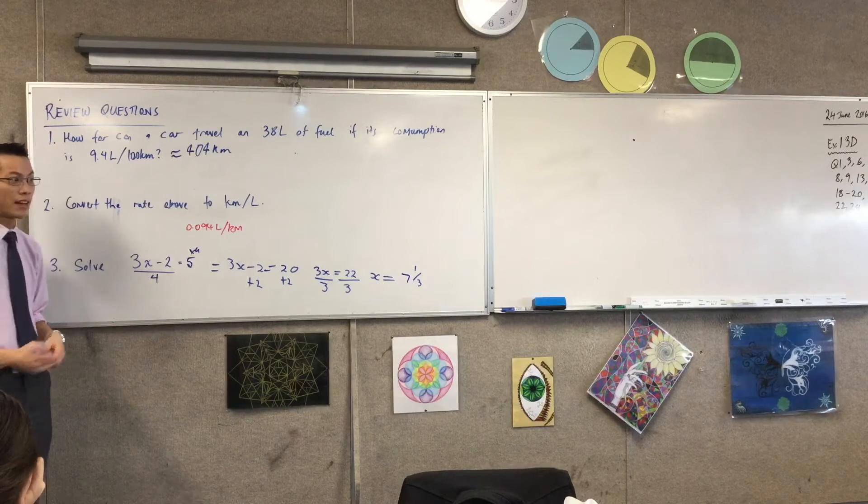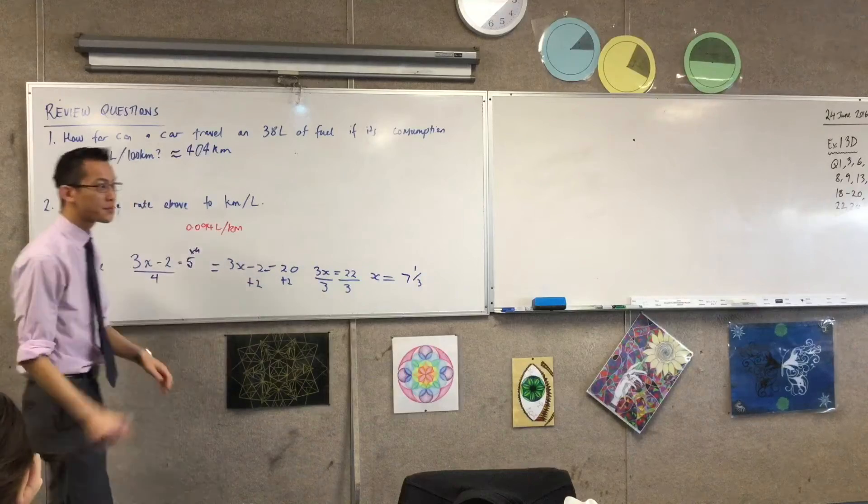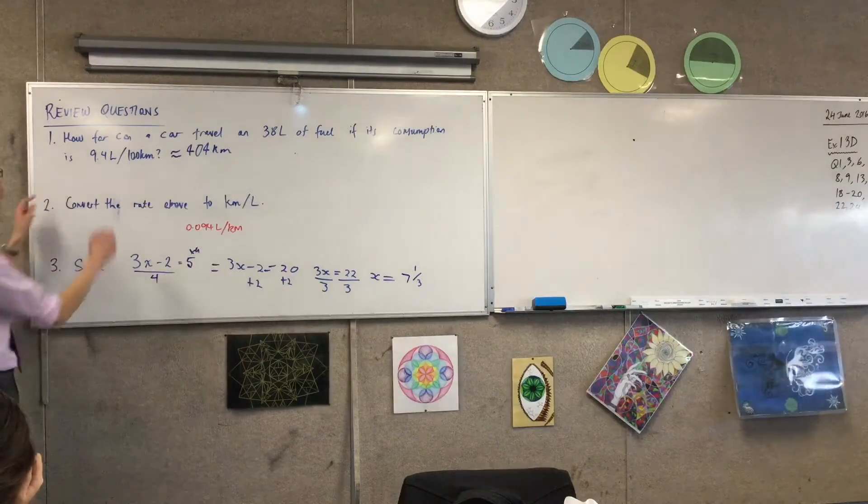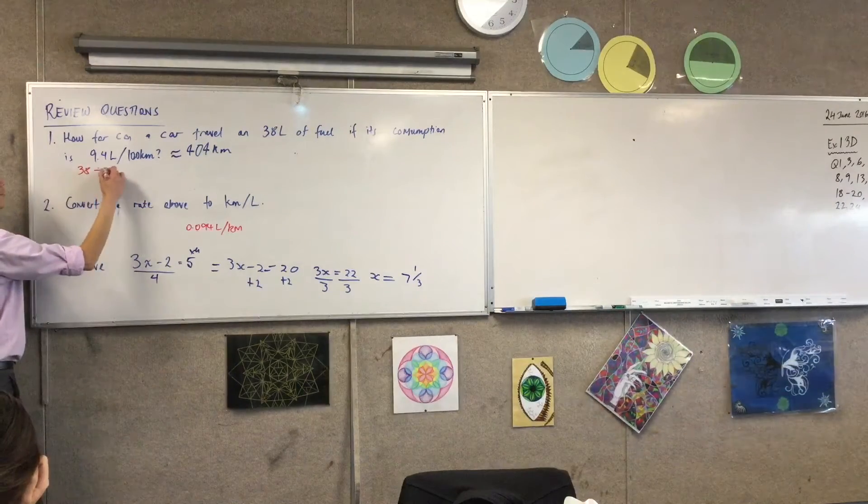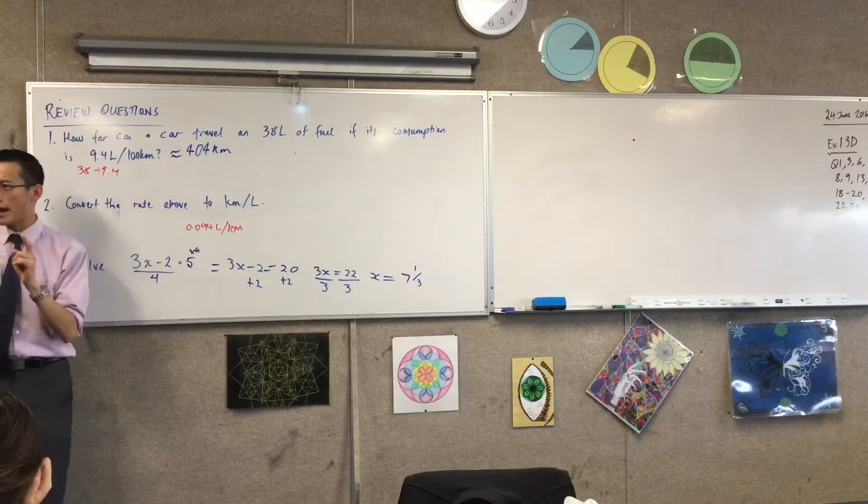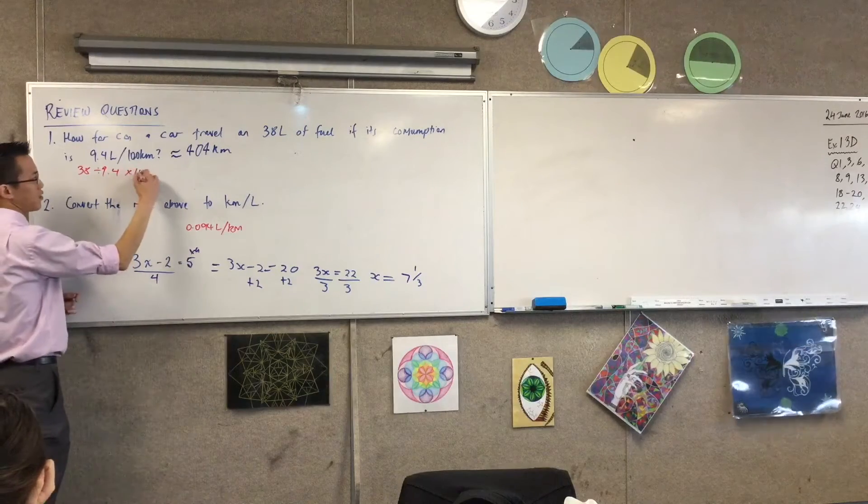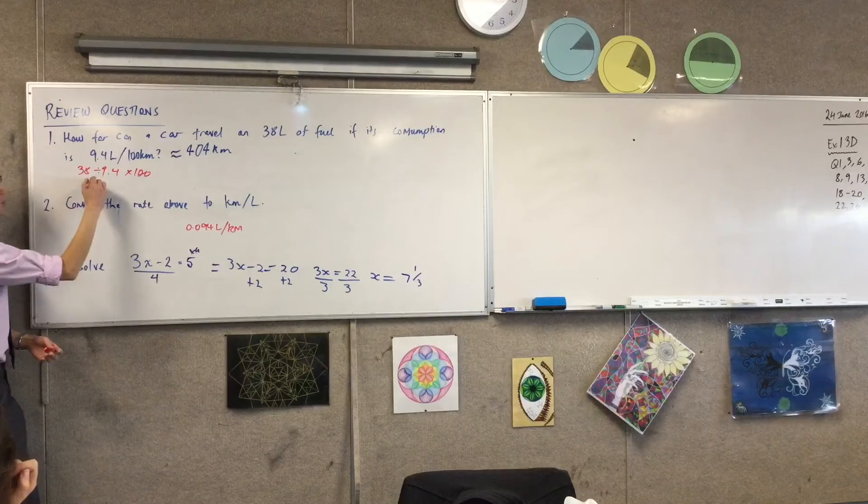Can someone give me an idea what line of working you might do? Okay, if you do 38 divided by 9.4, just before I get to the work out, times 100. Why am I writing like... why am I dividing by 9.4 in the first place? What is that actually doing?